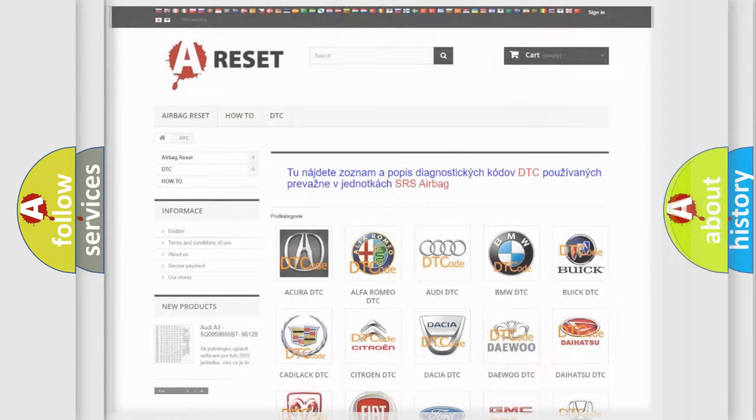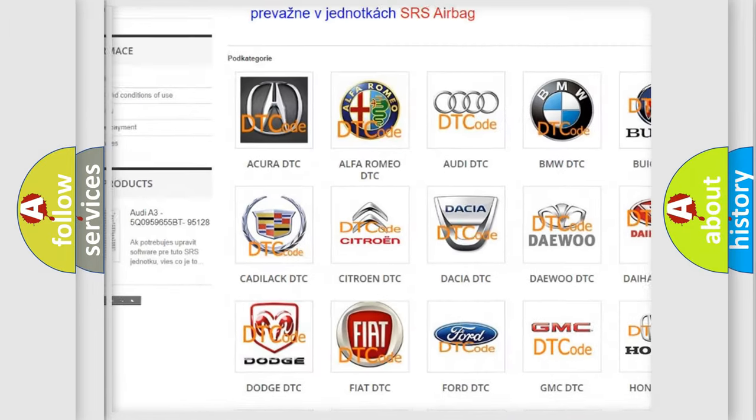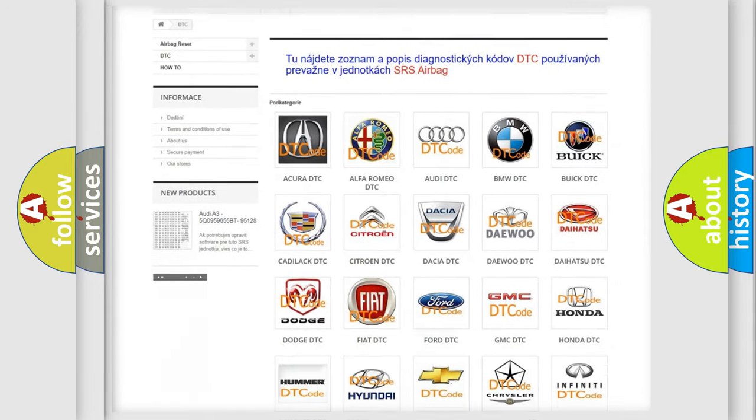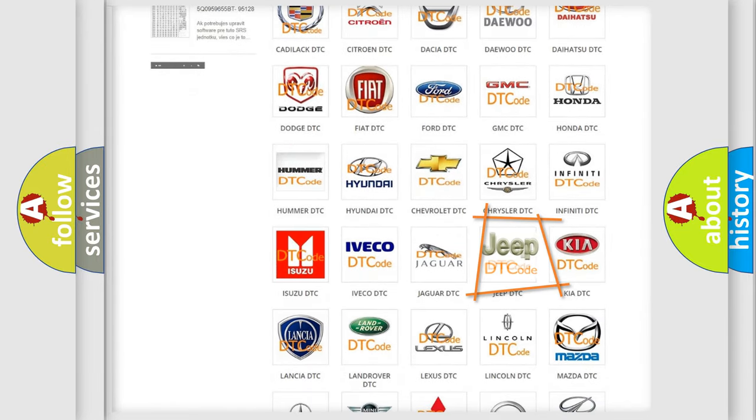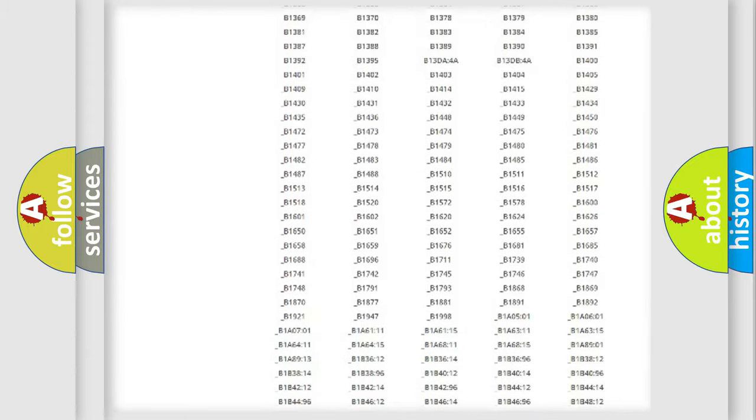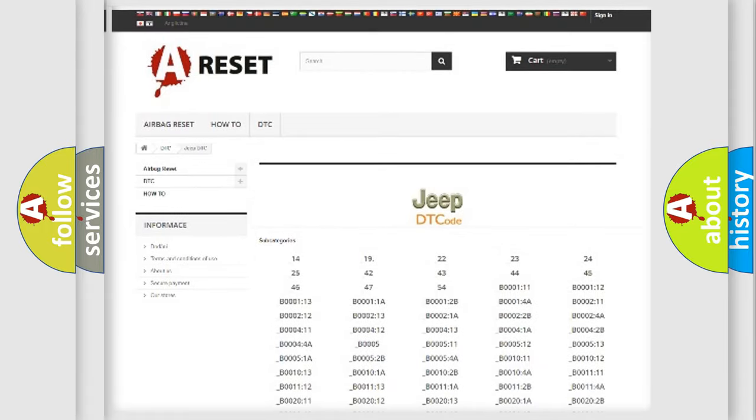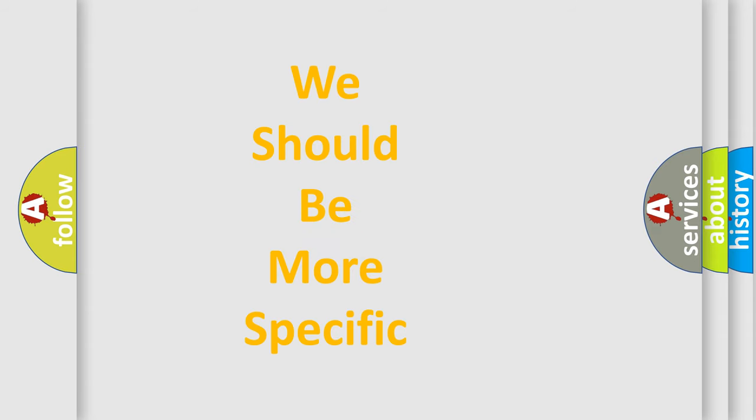Our website airbagreset.sk produces useful videos for you. You do not have to go through the OBD2 protocol anymore to know how to troubleshoot any car breakdown. You will find all the diagnostic codes that can be diagnosed in Jeep vehicles, and many other useful things. The following demonstration will help you look into the world of software for car control units.